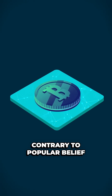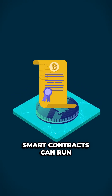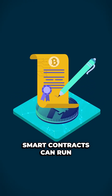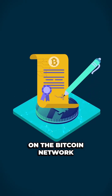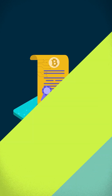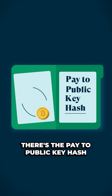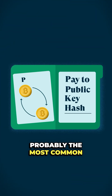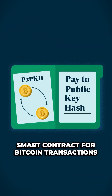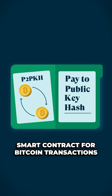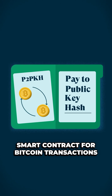Contrary to popular belief, smart contracts can run on the Bitcoin network. First up, there's the pay to public key hash, probably the most common smart contract for Bitcoin transactions.